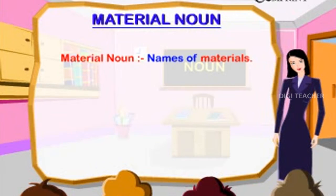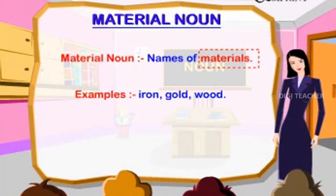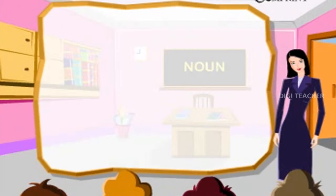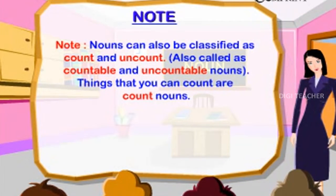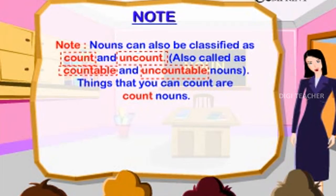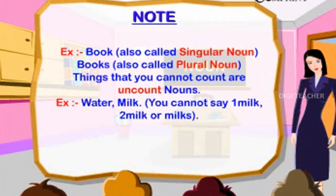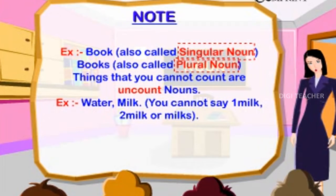Material Noun: names of materials. Examples: Iron, Gold, Wood. Nouns can also be classified as countable and uncountable. Things you can count are count nouns — for example, 'book' (singular) and 'books' (plural). Things you cannot count are uncount nouns — for example, water and milk; you cannot say 'one milk,' 'two milk,' or 'milks'.